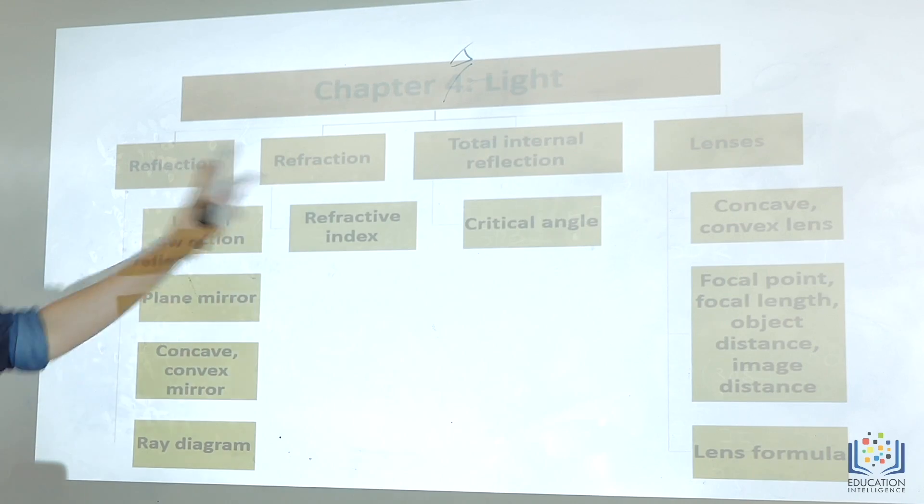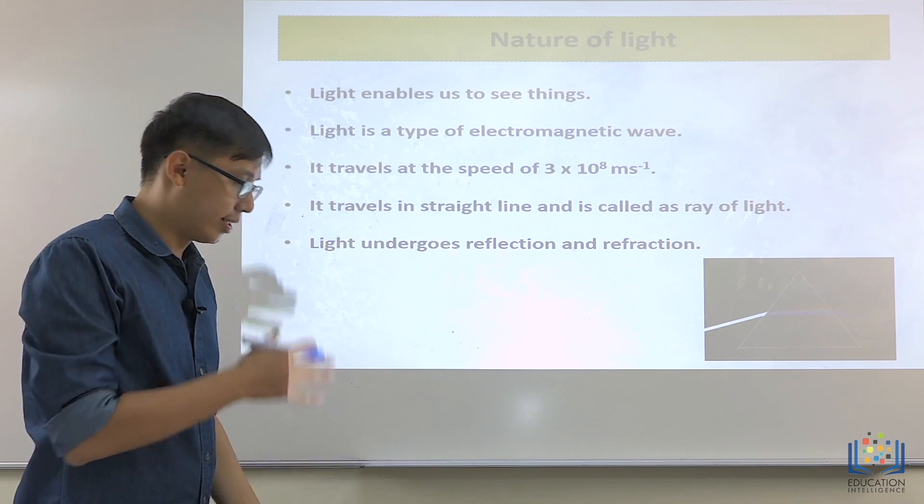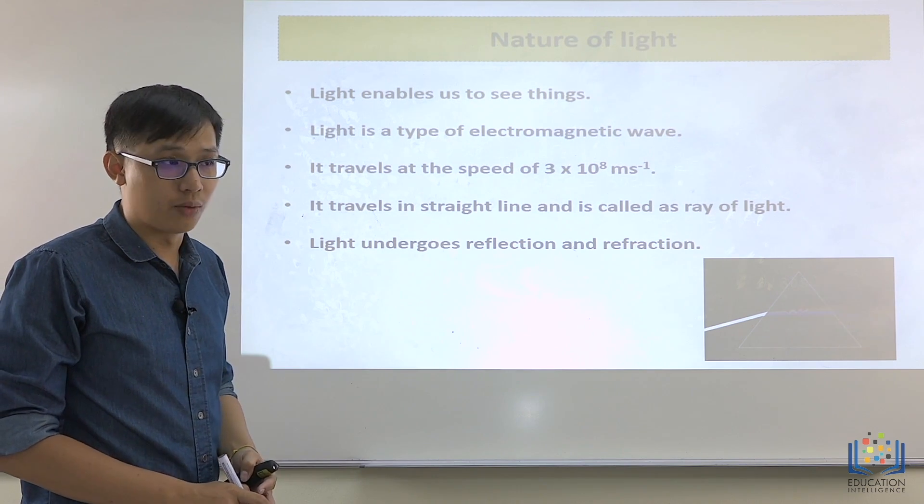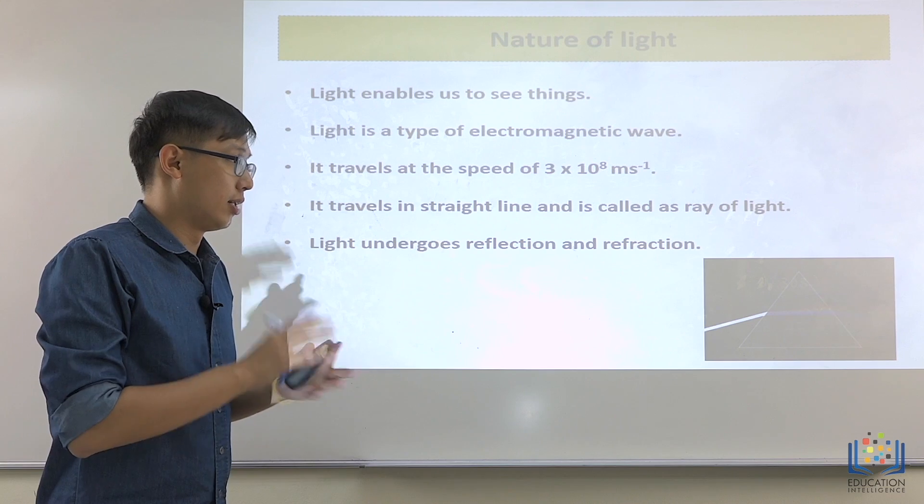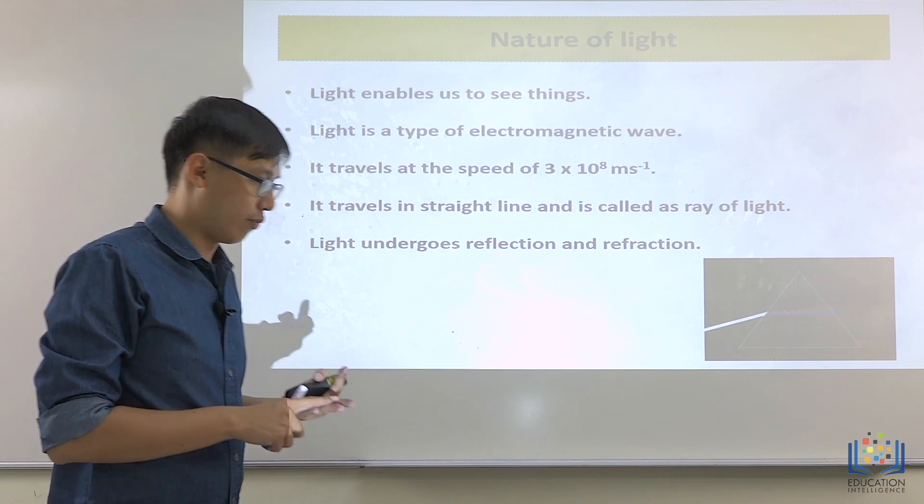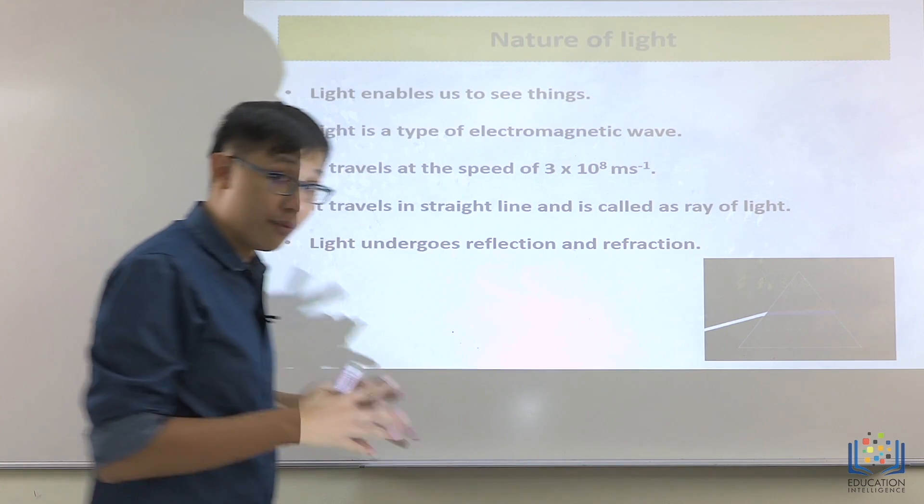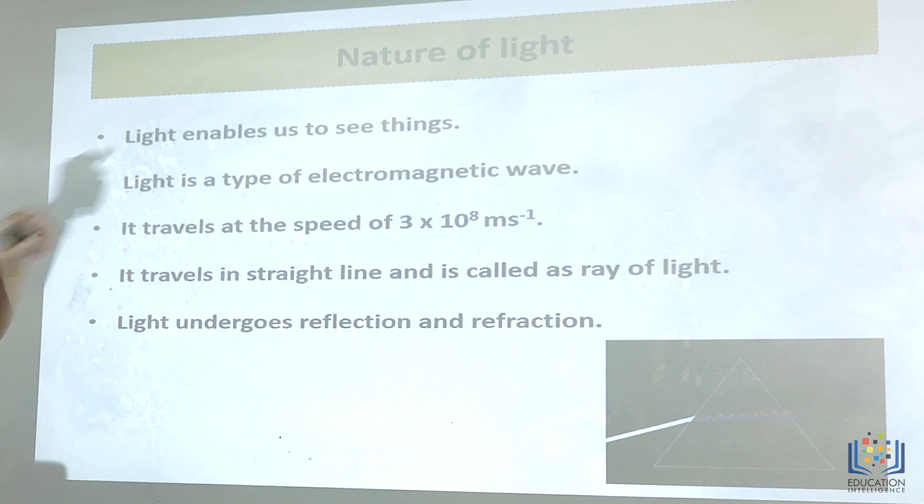In light, this is just a quick map on what we'll be learning in this chapter. You actually learn this nature of light in chapter 1 form 5, which is again, what is it, wave and vibrations.